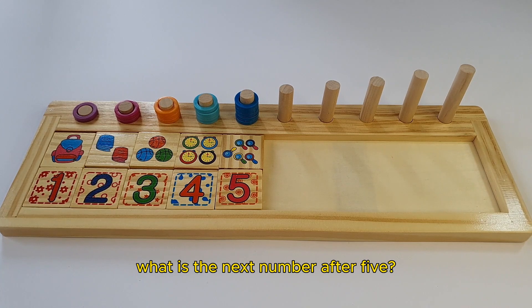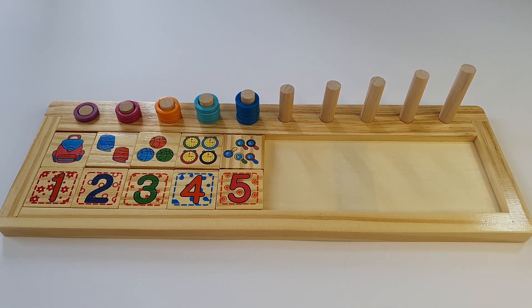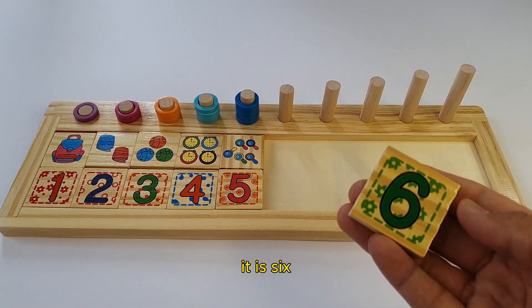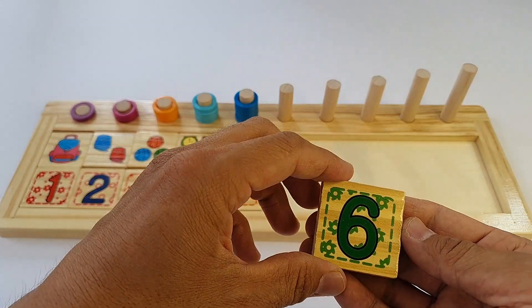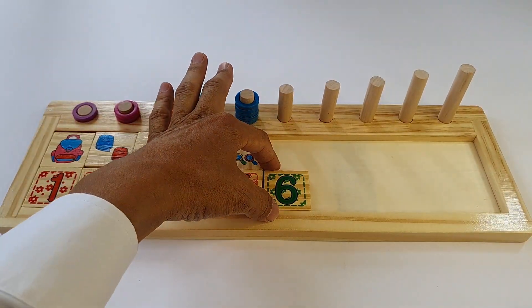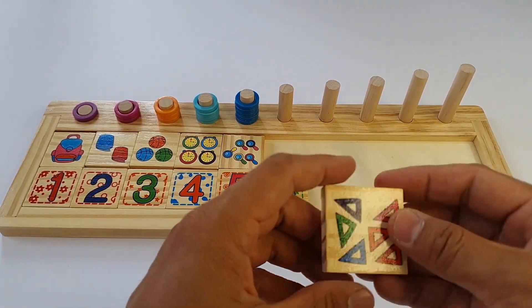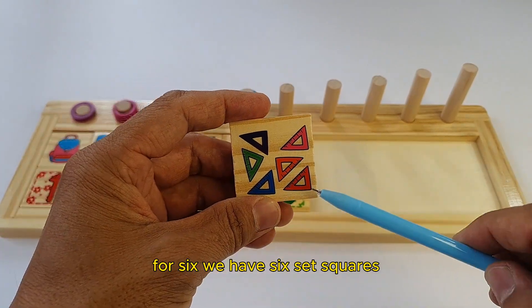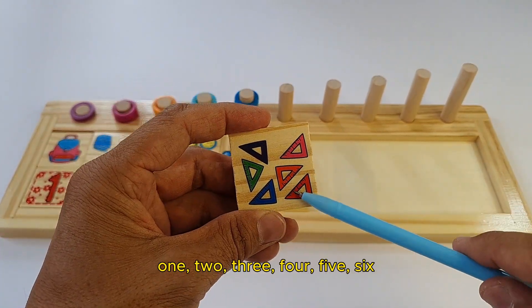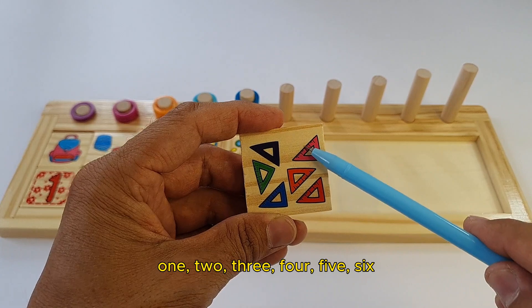What is the next number after five? That's right. It is six. For six, we have six set squares. One, two, three, four, five, six.